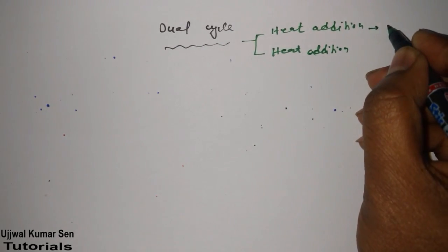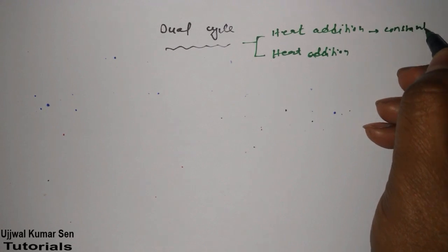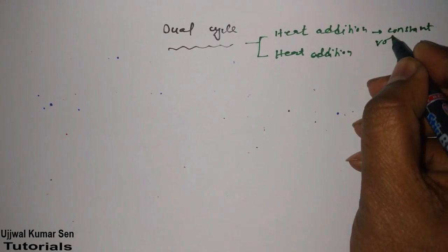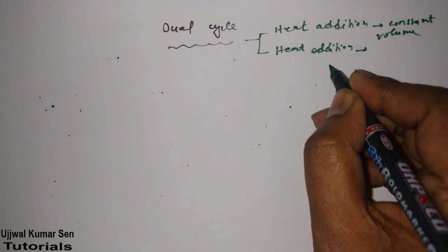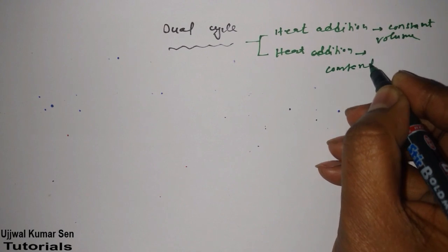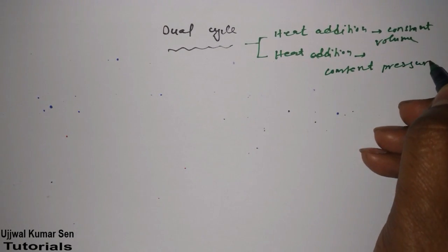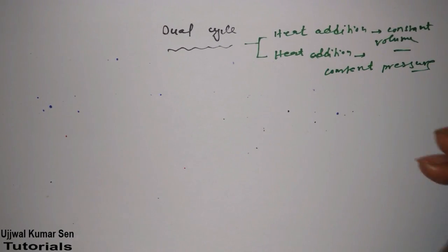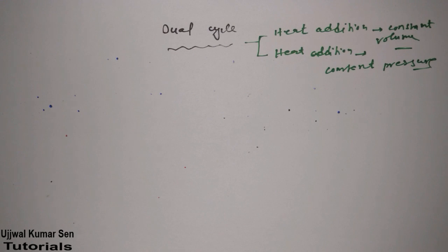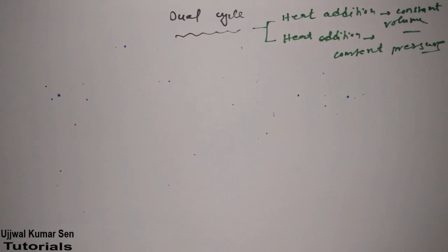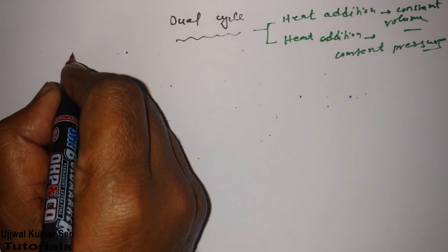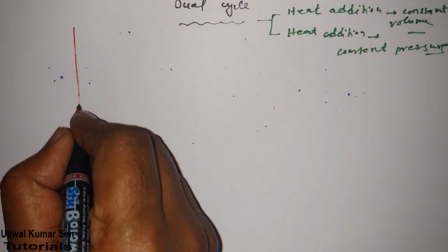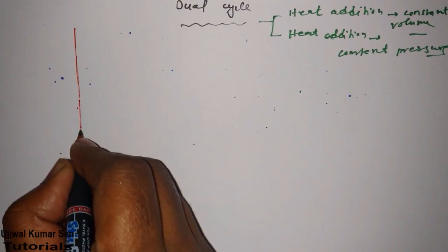Heat addition takes place once at constant volume and another time at constant pressure. To understand this, we need to draw a PV diagram. So let's look at the PV diagram for the dual cycle.